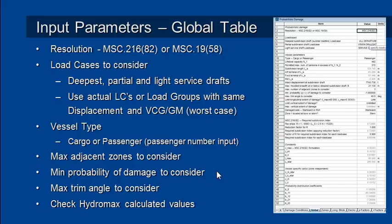As you define your zones of damage and the combinations, you'll find that some damage conditions have very low probabilities of occurring — either because they're very small or because of where they're located on the vessel. You can enter a minimum probability value that should be considered; if the probability of damage is lower than that, those analyses will be skipped and your analysis will be faster.